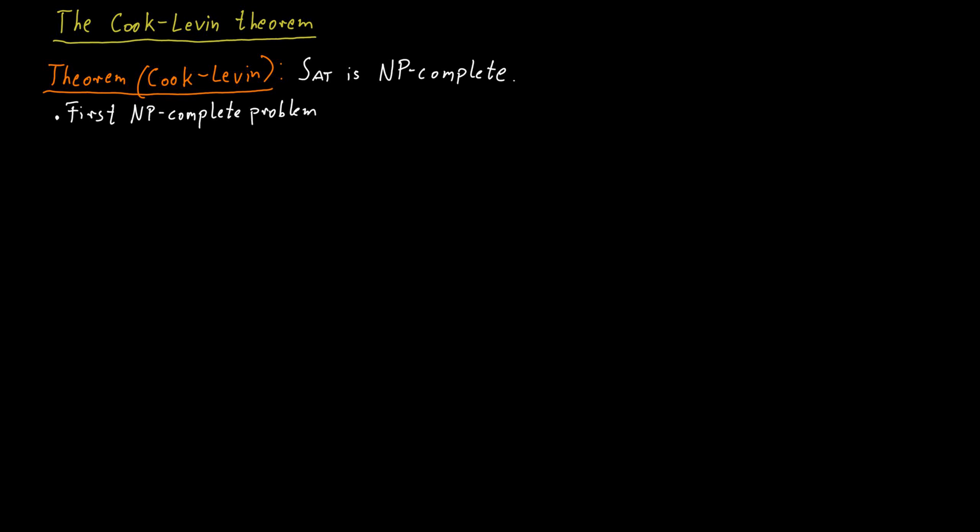So instead of having to show that every problem in NP reduces to X, we actually only have to show that one problem, say satisfiability, reduces to X. We will discuss all this in greater detail later separately. For now, it's just important that you understand that establishing for the first problem that it's NP-complete is much harder than establishing it for additional problems further down the line.